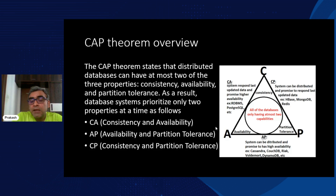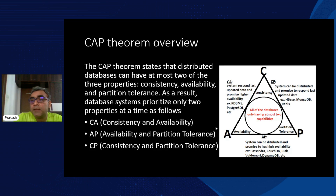Essentially these are the three CAP variants. For CA (consistency + availability), RDBMS is a good example. For AP (availability + partition tolerance), systems like Cassandra, DynamoDB are built for AP setup. For CP (consistency + partition tolerance), MongoDB is a good example. These systems are configured by default for one of these variants, and there are some configurations you can tailor, but this is the default — and based on that you can decide which to go with.